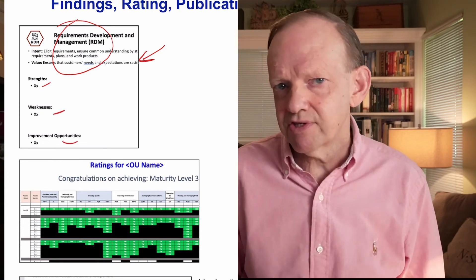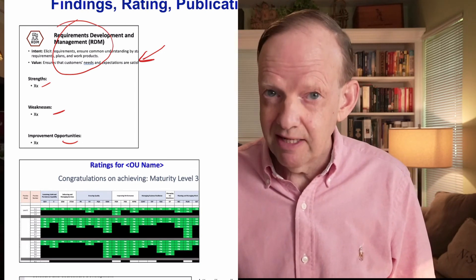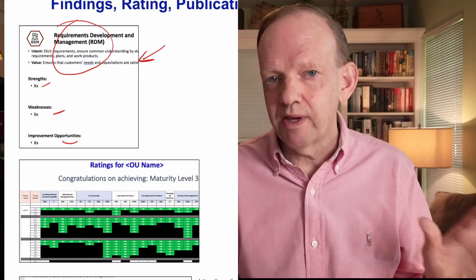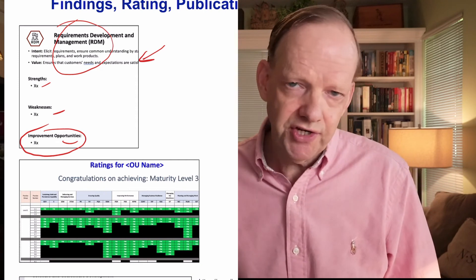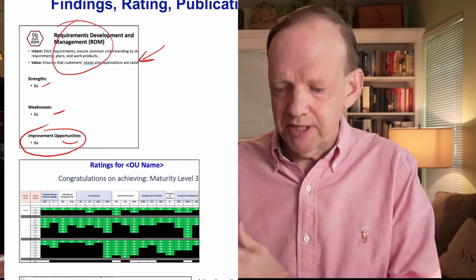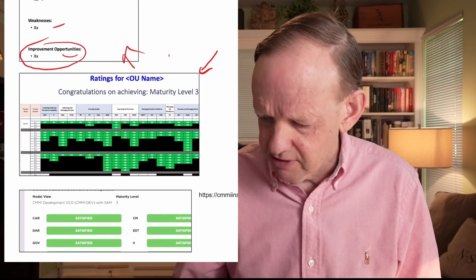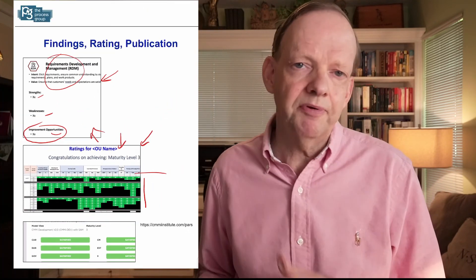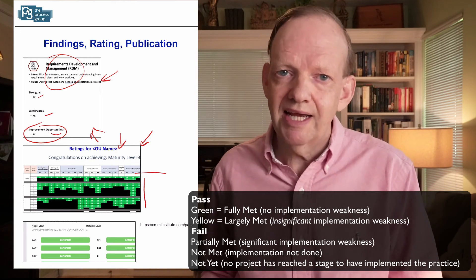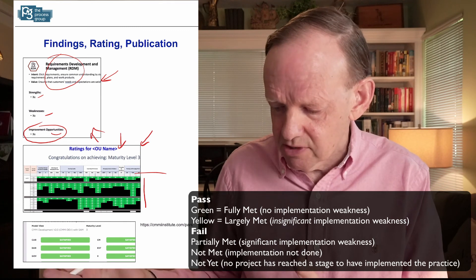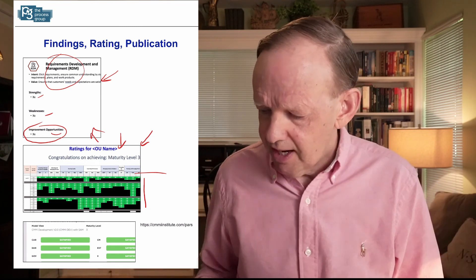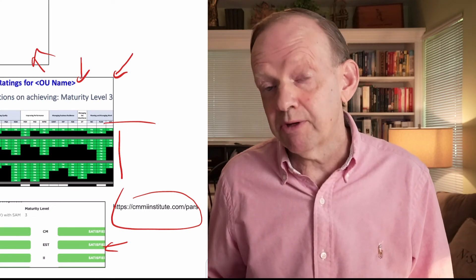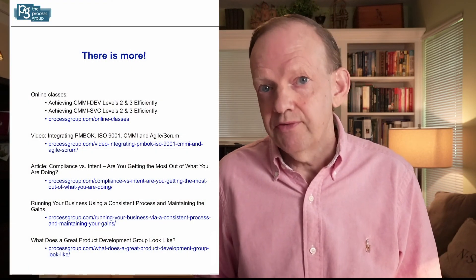The result of the appraisal includes a findings PowerPoint where every topic area lists its strengths, weaknesses, and areas to improve. You can have some weaknesses and still be okay — I would check with the lead appraiser beforehand about what weaknesses might be. I encourage appraisal teams to look for suggestions for making things more efficient after the appraisal. You also get a rating chart listing all topic areas on columns with practices down the side — green means fully met, yellow means largely met.